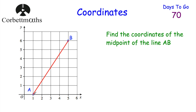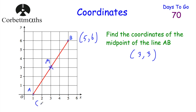Let's look at another question. We've got points A and B and we need to find the coordinates of the midpoint of line AB — pause the video and have a go. I can see the midpoint here — it's two across and three up from A, and two across and three up to B, so the midpoint is three, three. Using the formula: A is one, zero and B is five, six. One plus five equals six, halved is three. Zero plus six equals six, halved is three. So the midpoint is three, three.